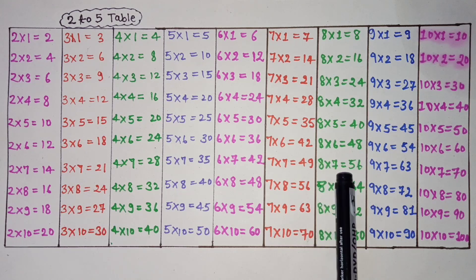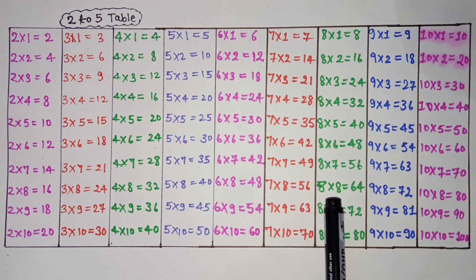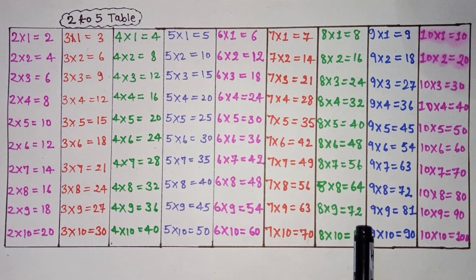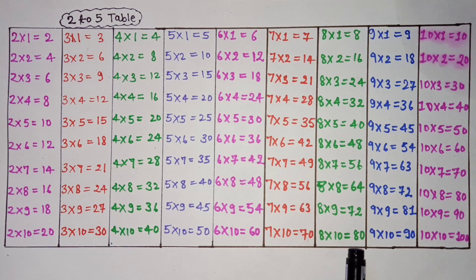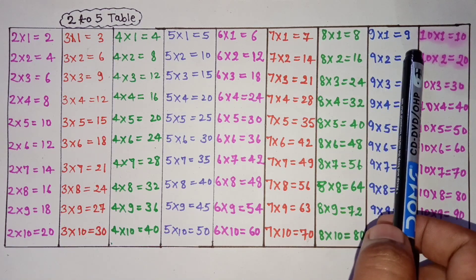8 7s are 56, 8 8s are 64, 8 9s are 72, 8 10s are 80. 9 ones are 9.